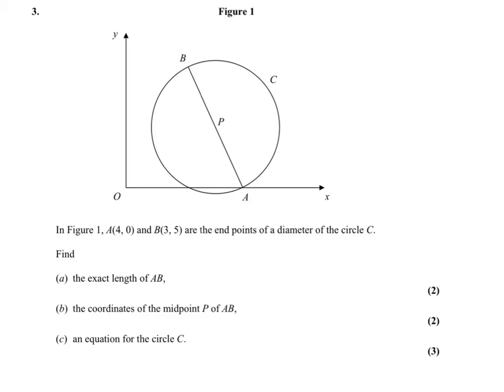Question 3. In the figure, find the exact length of AB. It says A is (4,0), B is (3,5). Well, that's a bit of Pythagoras, isn't it? So difference in the x coordinates is 1, so it's 1 squared. Difference in the y coordinates is 5, so 5 squared, which equals root 26.